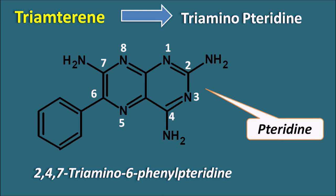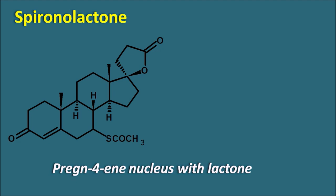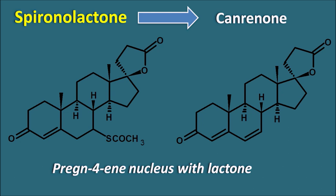The third structure is spironolactone. Spironolactone has a steroidal ring system — it is a steroidal lactone with a pregnane nucleus and a lactone ring system attached by a spiro linkage. The metabolite of spironolactone is canrenone, which is also clinically active. Canrenone does not have a thio group at the sixth position; instead, it has a double bond.